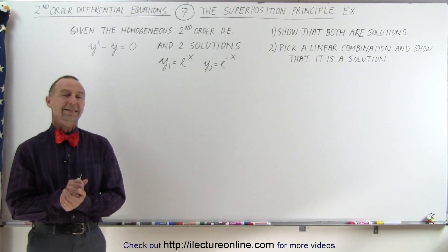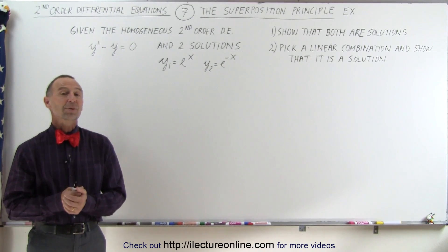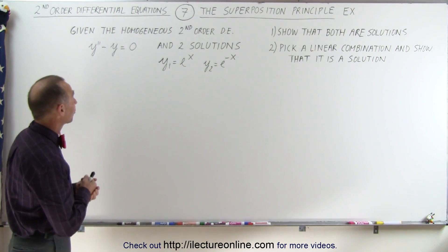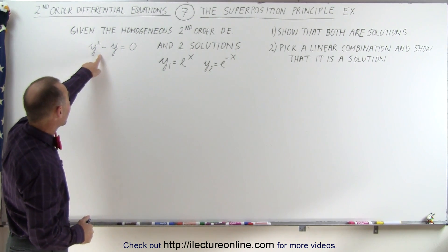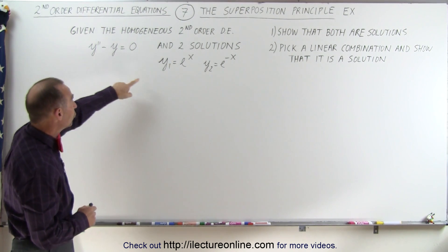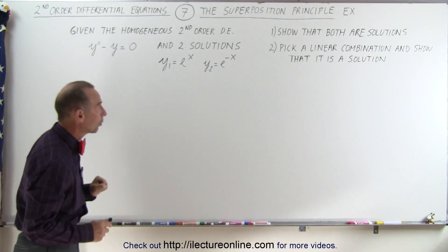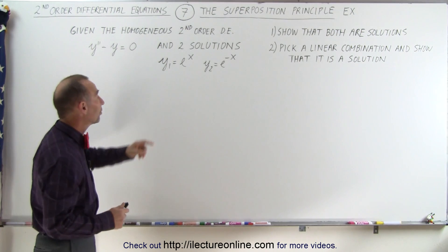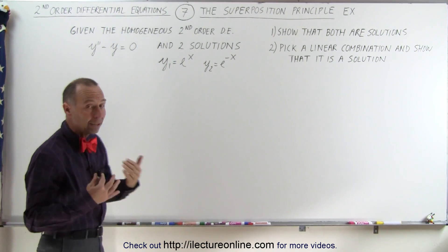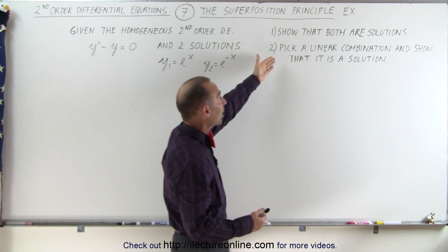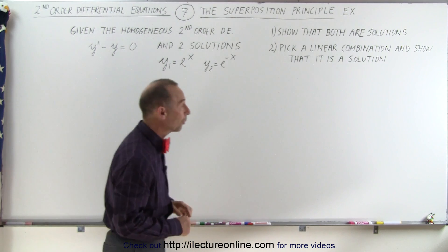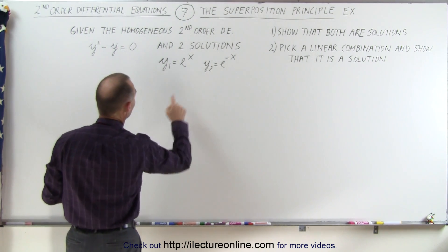Welcome to our lecture. Now let's do an example on the superposition principle with a linear differential equation. Here we have a second order homogeneous linear differential equation and two solutions to that equation. All we're trying to show is that each one of those are indeed solutions, and then we're going to pick a random linear combination and show that it also will be a solution to that equation.